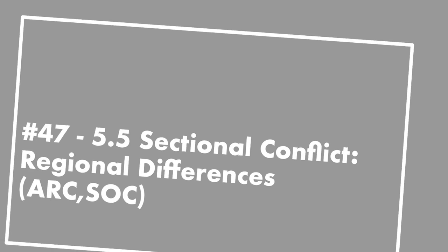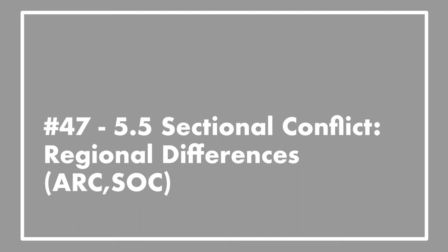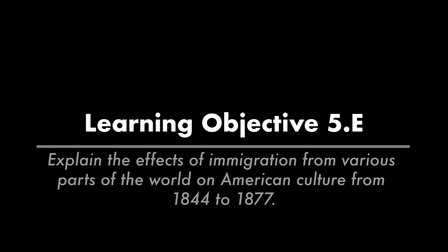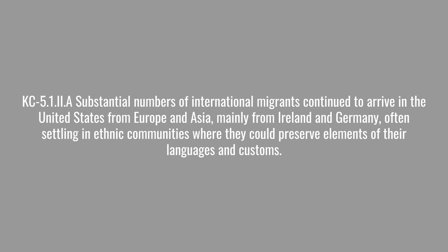Hello and welcome to lecture number 47. The topic today is 5.5, Sectional Conflict, and we're talking about regional differences. There are two themes: America in regional culture and social structures. The first of two learning objectives is to explain the effects of immigration from various parts of the world on American culture from 1844 to 1877. There were three different groups that came during this time, and this key concept covers how they affected culture and society in the United States between 1840 and 1860.